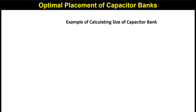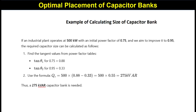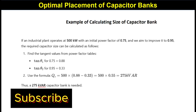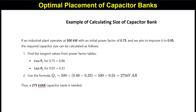Now we will take a simple example using this formula. An industrial plant operates at 500 kW with an initial power factor of 0.75, and we aim to improve it to 0.95. We first find tan θ1 for a power factor of 0.75, and tan θ2 for a power factor of 0.95, which gives a value of approximately 0.33.